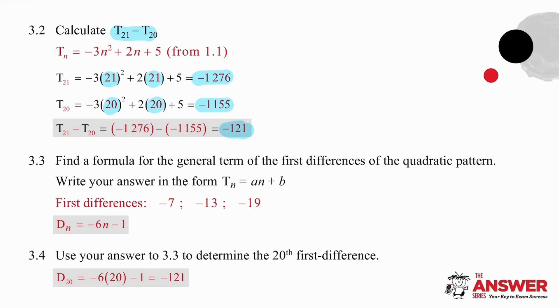Now, in 3.3, the question asks us to find a formula that will generate those differences between the terms, the first differences. So, we start by looking at the first differences which we've worked with earlier, minus 7, minus 13, minus 19. This is a simple linear pattern. The coefficient is the difference between those terms. So, the coefficient of n is going to be negative 6. And then, by inspection, we are simply going to work out that if we substitute 1, negative 6 is not the same as negative 7. We have to subtract 1 to work that out.